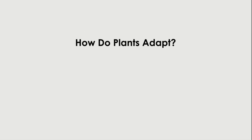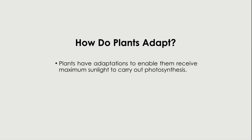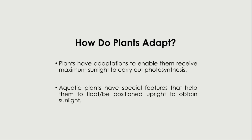Plants have adaptations to enable them to receive maximum sunlight to carry out photosynthesis — that's their main function. Aquatic plants have special features that help them to float or be positioned upright to obtain sunlight. Even home plants have leaves that face where they can get maximum sunlight, or grow towards where they receive sunlight from.